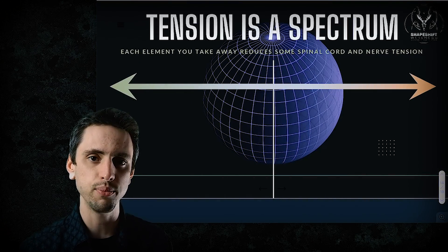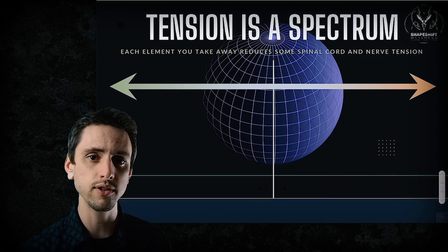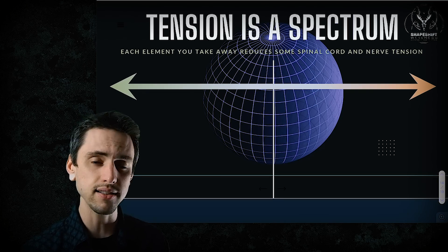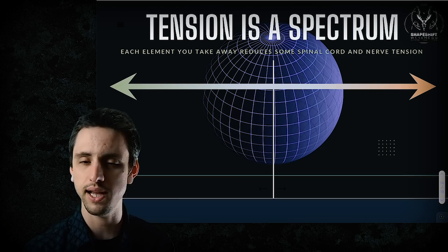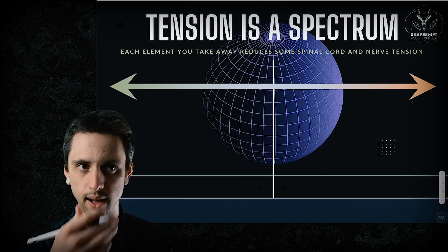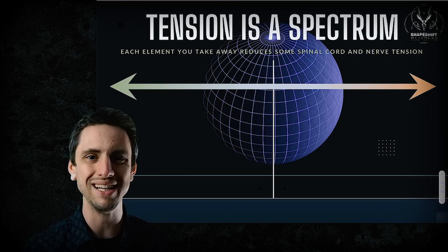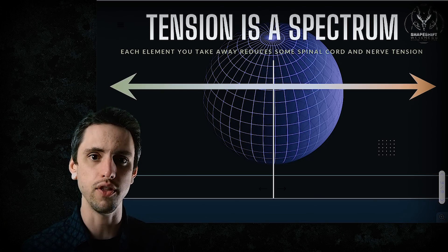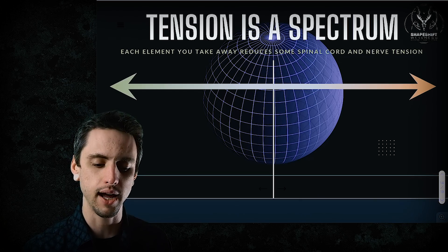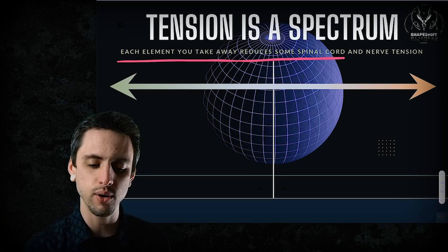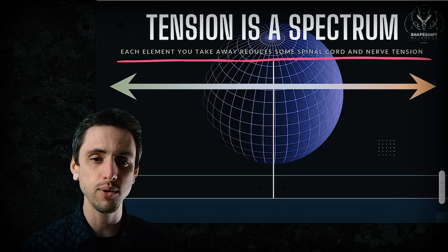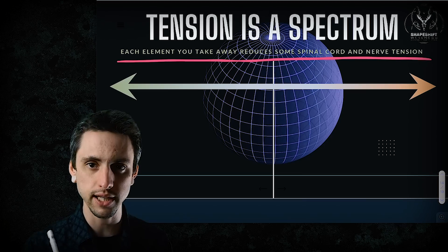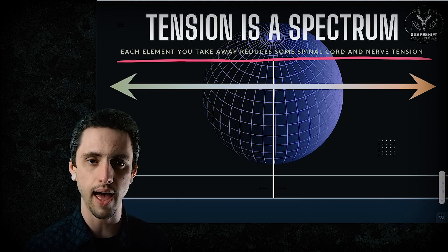Tension is a spectrum. I named five sites of compression and suggested you put tension on only two of them. The more sites you compress, the more you're tensioning and straining the nervous system. The fewer sites, the less stress on the nervous system. Each element you take away reduces some spinal cord and nerve tension. So if you really want to fold forward, at least look up or at least point your toes.